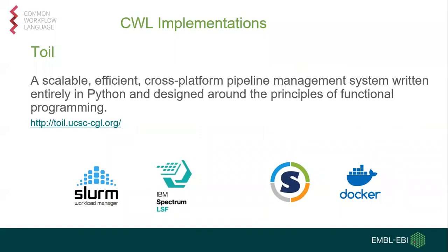From the different CWL implementations, we are running TOIL. We selected TOIL because it is a scalable, efficient, and cross-platform pipeline system. Most importantly for us, it integrates with the different components available at ABI — for example, job schedulers like Slurm or LSF — and we can also use Docker or Singularity for different components, giving us a lot of flexibility and adaptability for the pipeline with minimal modifications.